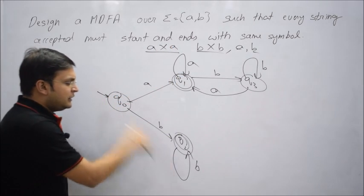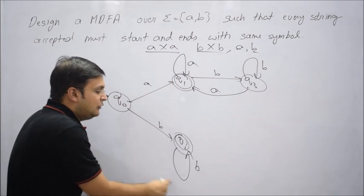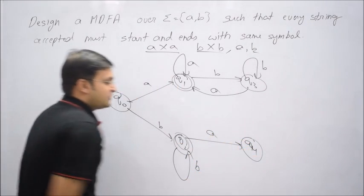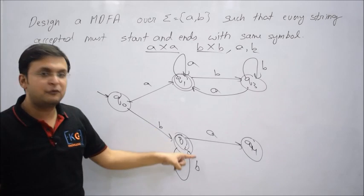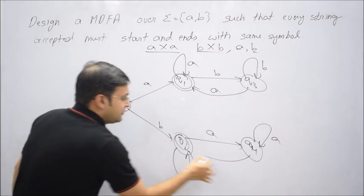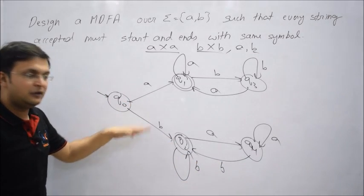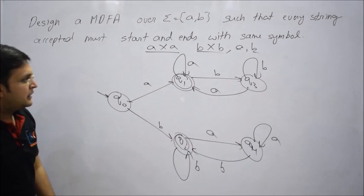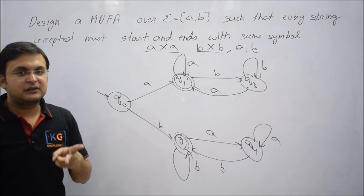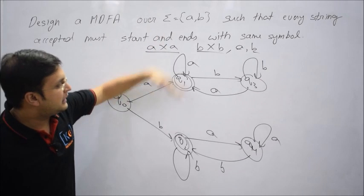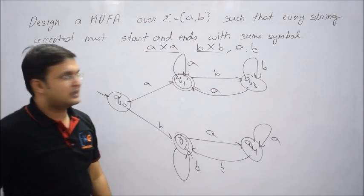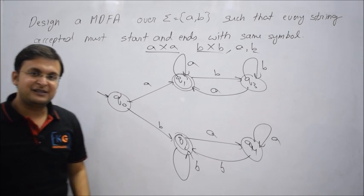Analogously, on the B-side: from Q2, if B comes, loop on Q2 (final state). But if A comes, that is not acceptable as the ending since you started with B. So temporarily loop on a state for A, and as soon as B comes again, return to Q2. This completes the DFA — Q1 and Q2 are the two final states. This machine accepts all strings that start and end with the same symbol.